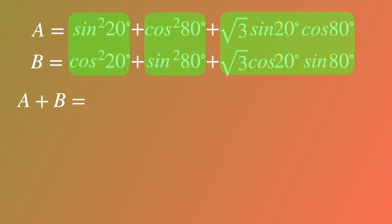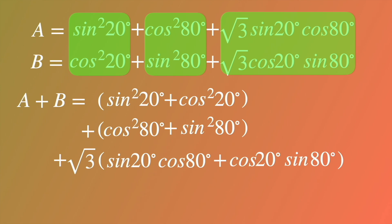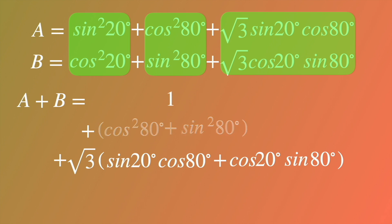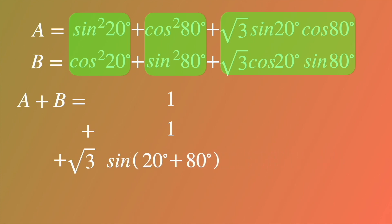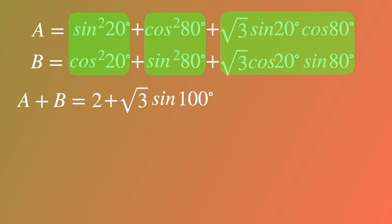Notice that A plus B equals the following expression. We have sine squared of 20 degrees plus cosine squared of 20 degrees equals 1, and cosine squared of 80 degrees plus sine squared of 80 degrees equals 1. The remaining term equals sine of 20 degrees plus 80 degrees according to the sum formula. So A plus B equals 2 plus square root of 3 times sine of 100 degrees. That's the first equation.